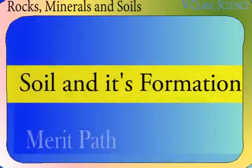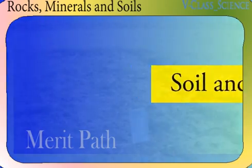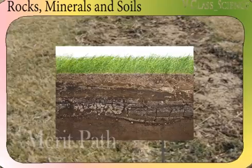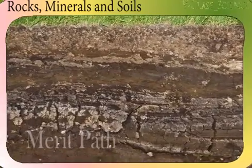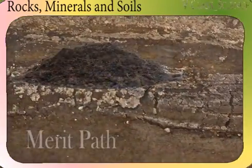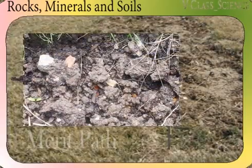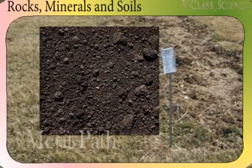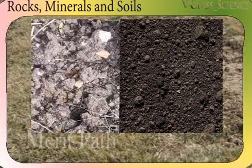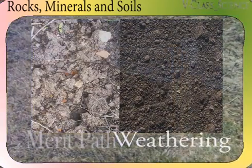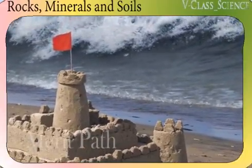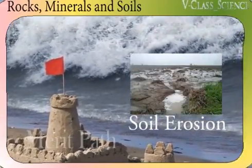Soil and its formation. Soil is the uppermost layer of the earth. Plants get their nutrition from the soil. Soil is formed by breaking of rocks into small pieces. This process of wearing away of rocks is called weathering. The process of water or wind carrying away soil is called soil erosion.